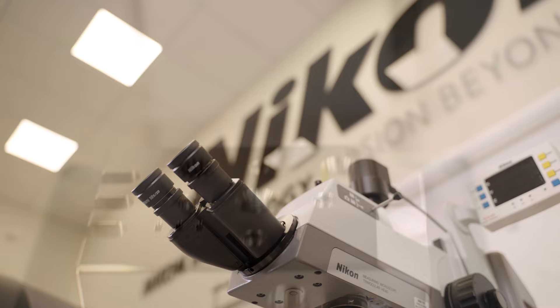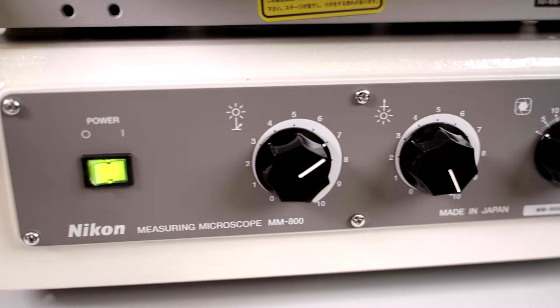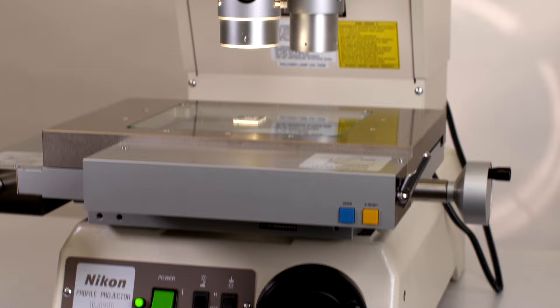A measuring microscope, or as we at Nikon call it the MM range, is a precise instrument that combines the high magnification capability of a metallurgical microscope with linear encoders.